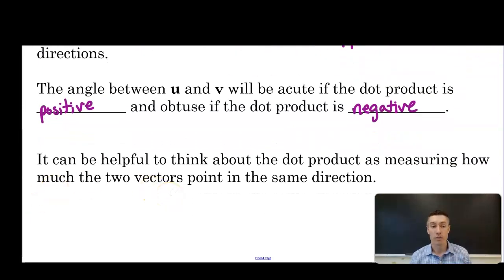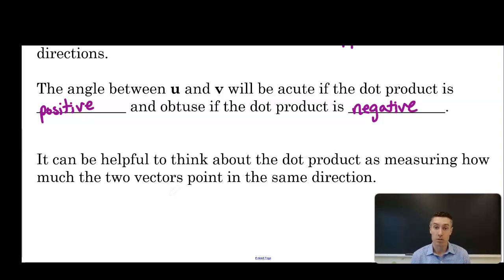A helpful way to think about the dot product is as measuring how much the two vectors point in the same direction. A positive dot product means the vectors are pointing roughly in the same direction. A negative dot product means the vectors point in more or less opposite directions. And a dot product of zero tells us the two vectors are orthogonal or perpendicular. Those are two ways to define the dot product, ending with its meaning — the first of two vector products we will define.